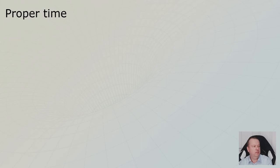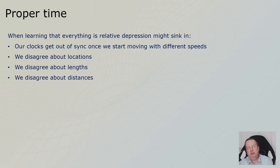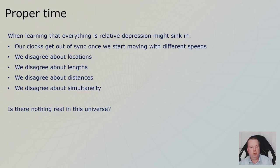So let's see if I can define it a few more times. We learned in previous levels that clocks get out of sync once they start moving at different speeds. We learned that we disagree about locations, about length, about distances. We don't even agree on when things happen at the same time. So is there nothing real in this universe?